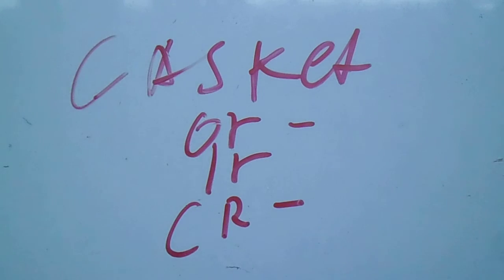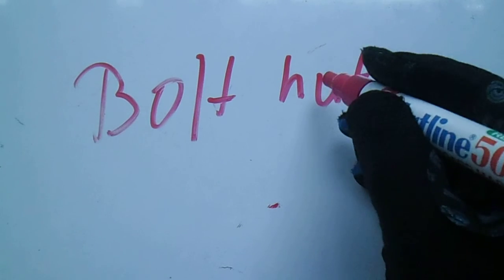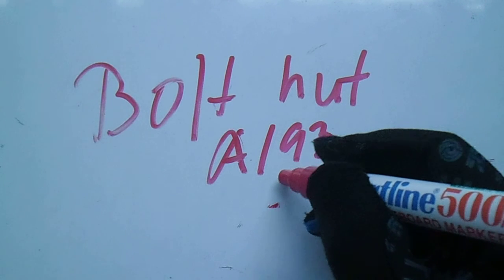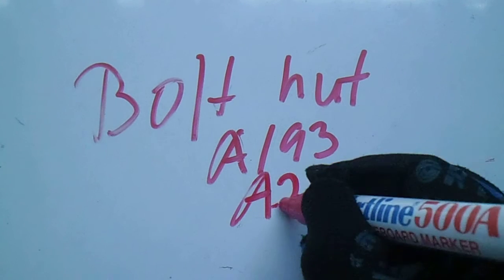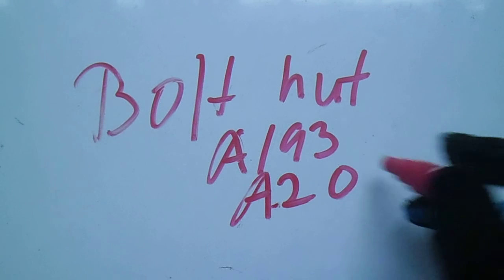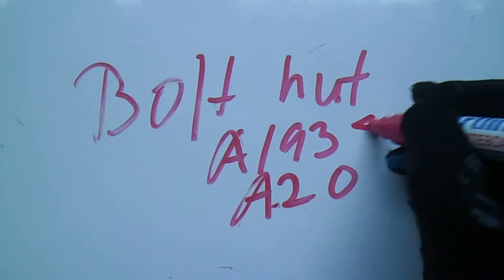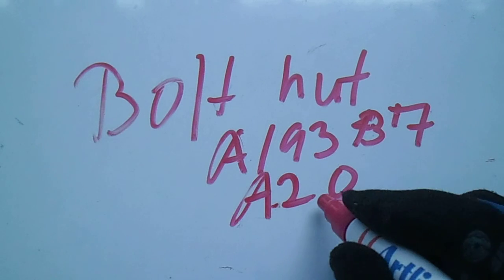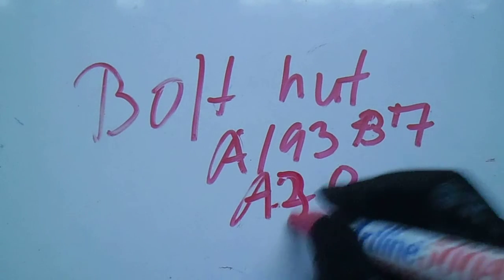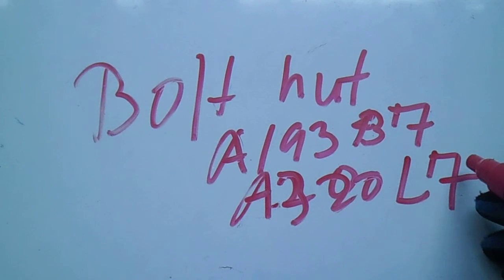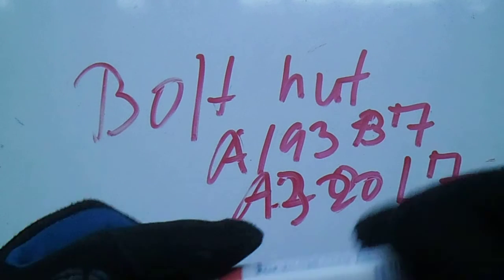Next is bolt and nut. The ASTM codes for bolts and nuts are A193 and A320. For A193, the grade is B7. For A320, the grade is L7. So B7 and L7 are the bolt grades used.